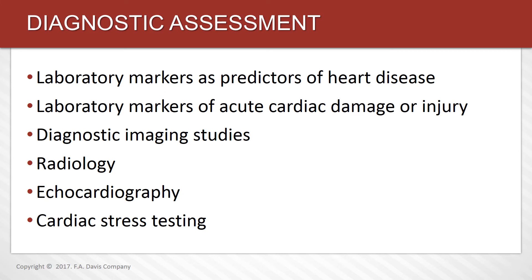There are some diagnostic tests to assess the cardiac system. Laboratory markers as predictors include the lipid panel: total cholesterol, LDL (low-density lipoprotein), HDL (high-density lipoprotein), and triglycerides. Homocysteine, an amino acid, can implicate the development of heart disease — it can damage the lining of the arterial walls, causing clot formation. Laboratory tests for acute cardiac damage include enzymes or proteins elevated in response to cellular injury, some specific to cardiac tissue and some generalized.